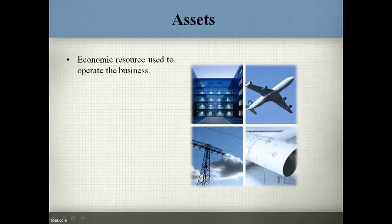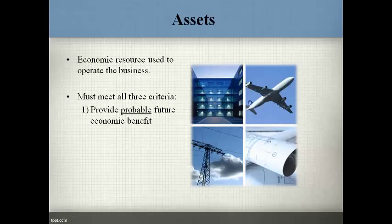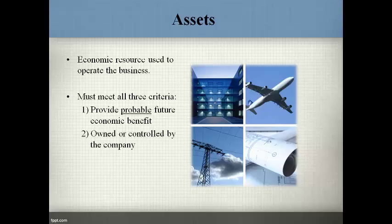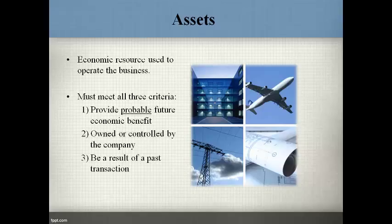An asset is an economic resource used in the operations of the business. Assets must meet three criteria in order to be reported on the balance sheet. An asset must provide probable future economic benefit, which means it is expected to be exchanged for cash or be used to generate revenues in future cash. They must be owned or controlled by the company, which means they don't have to be owned and can be leased. The company cannot project they will have something and report it now — an exchange must have already occurred.